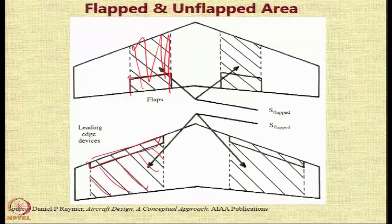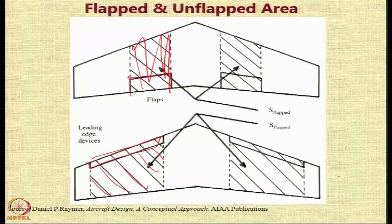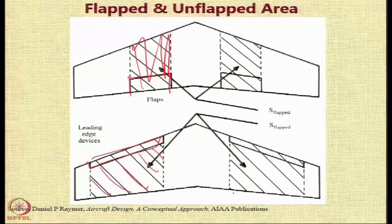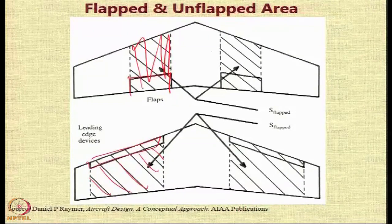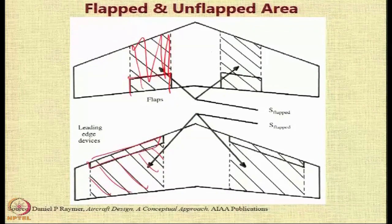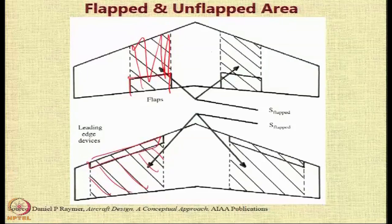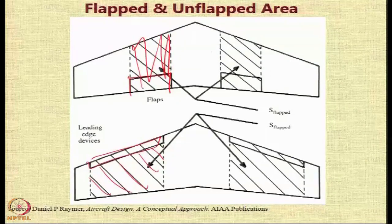So you have to use these ratios. And notice, if you have almost full span flaps, for example, suppose you have a wing where you have full span flaps, then you know the ratio between the two is going to be almost equal to 1.